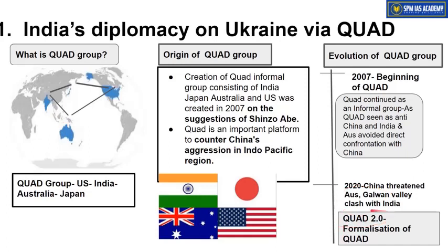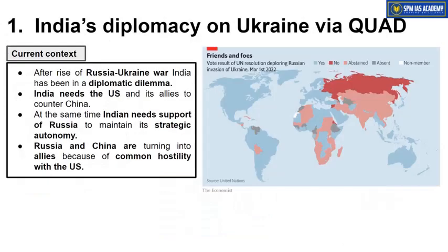Quad is no longer just a security or strategic group; it is expanding into economy, people-to-people cooperation, and cultural ties — and is becoming more and more formal. This formalized era is sometimes called Quad 2.0. Recently, meetings have been held at different diplomatic levels — foreign ministers met, including India's Foreign Minister S. Jaishankar, and in the coming time, head-of-state, prime ministerial, and presidential level meetings will also be held. This is how Quad is getting formalized.